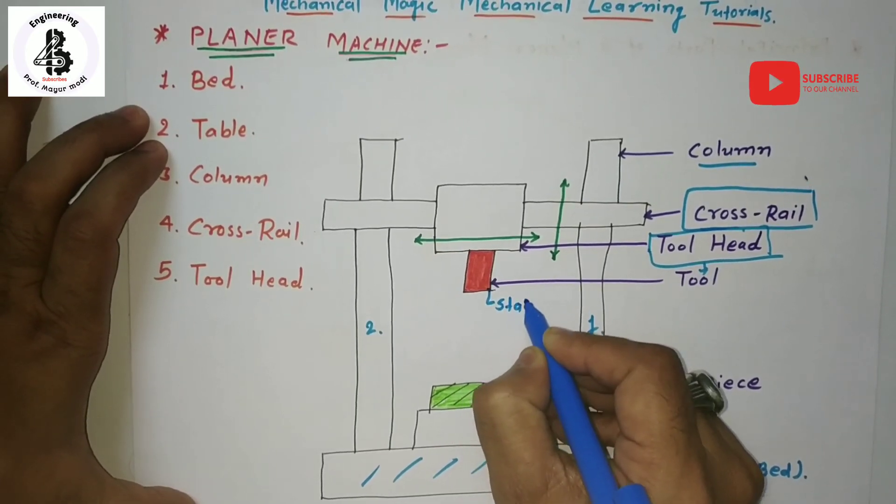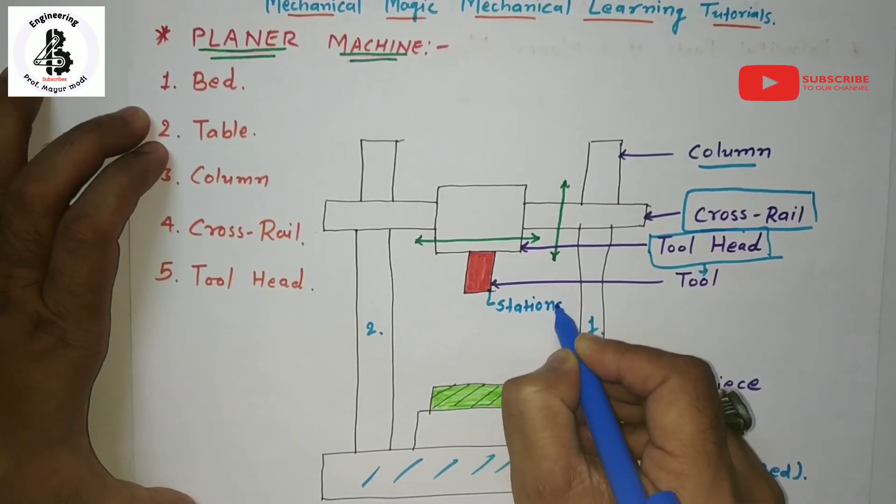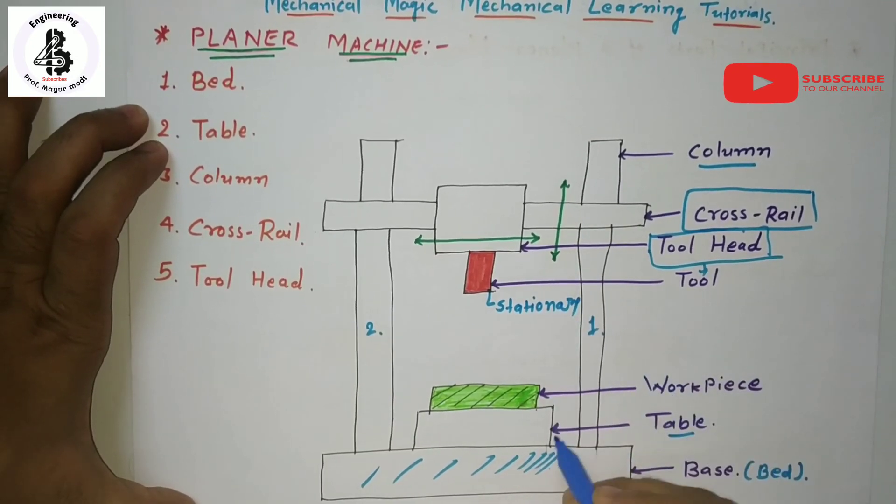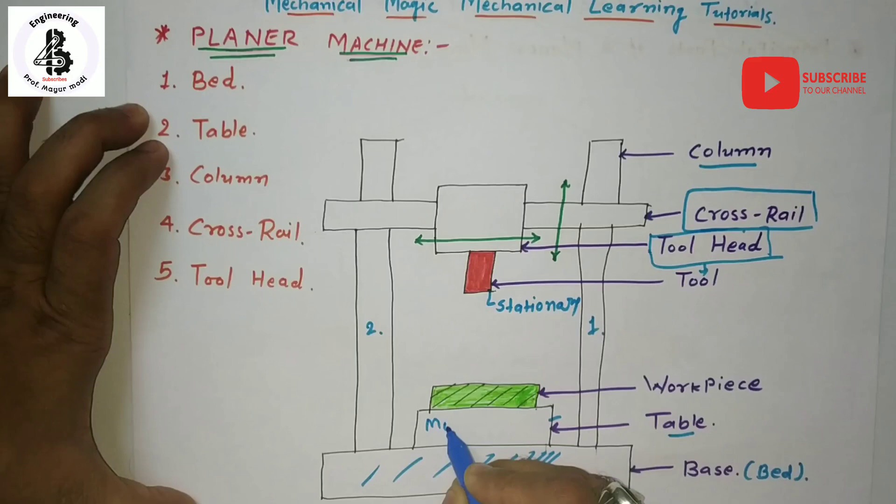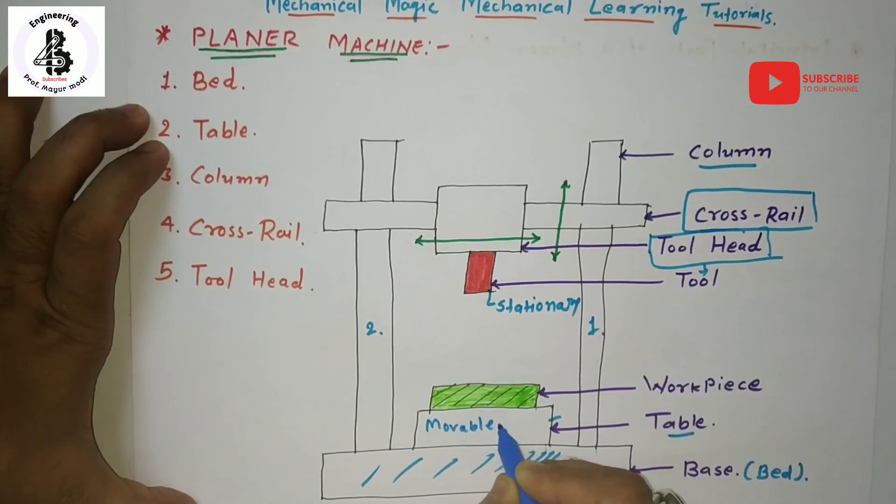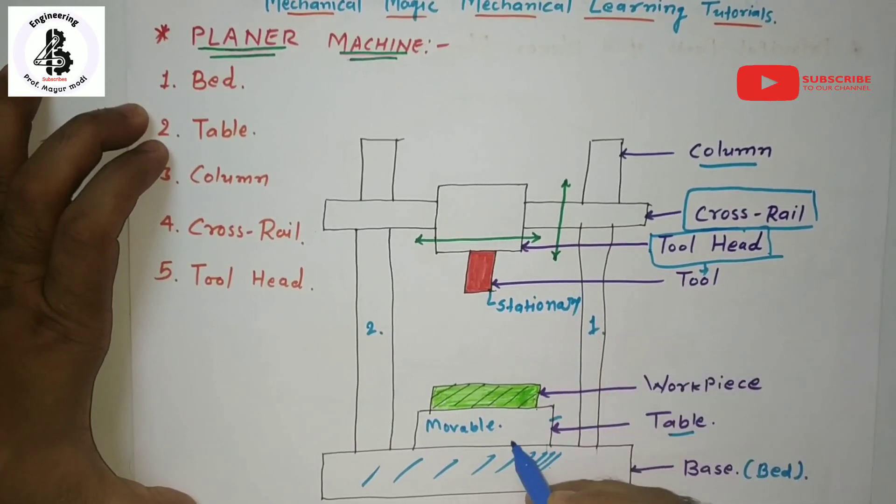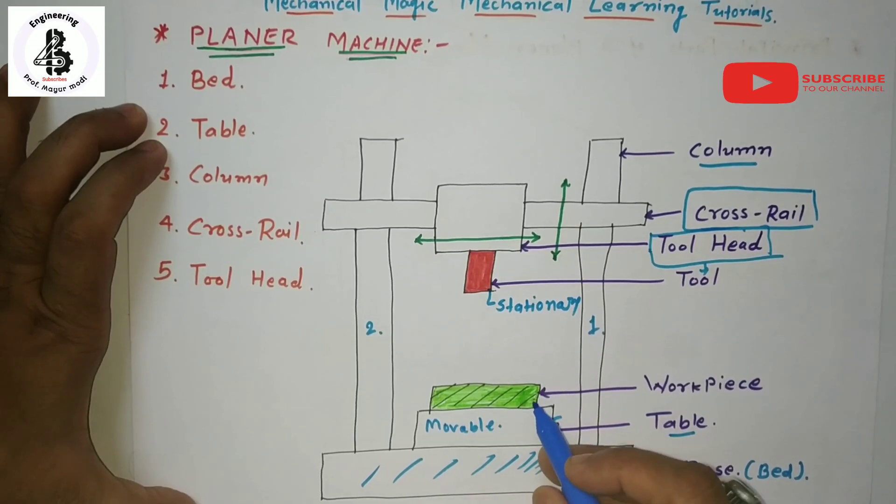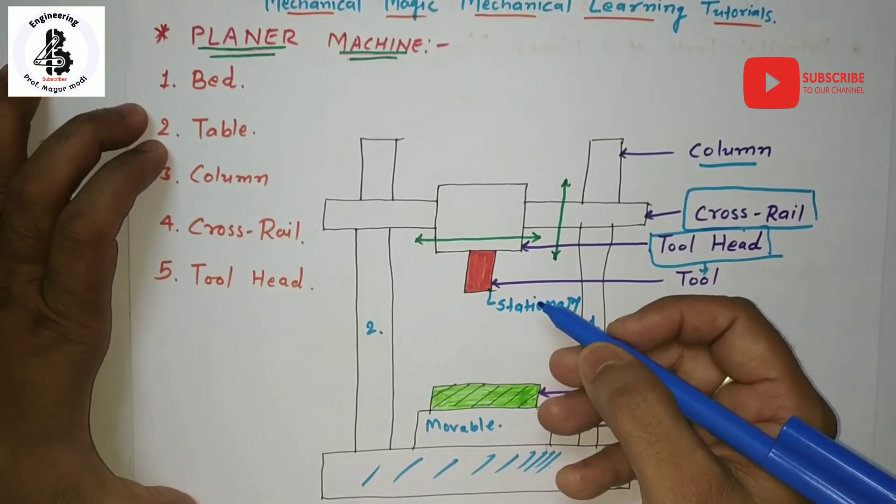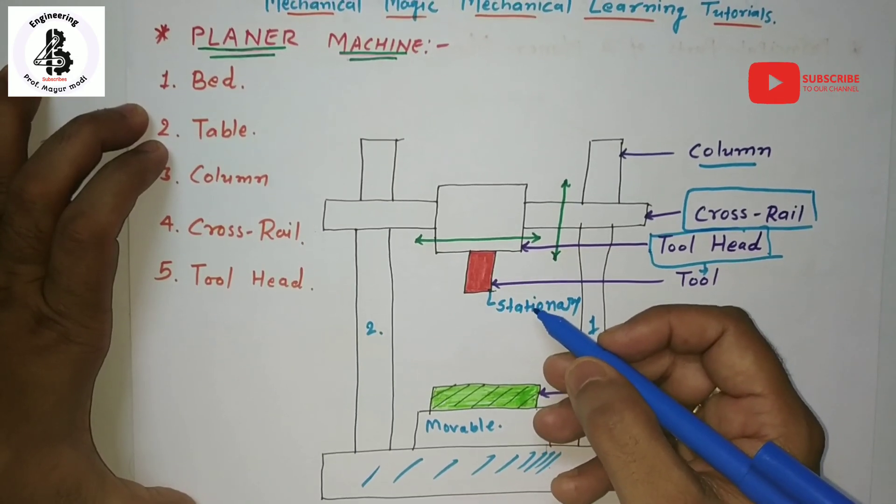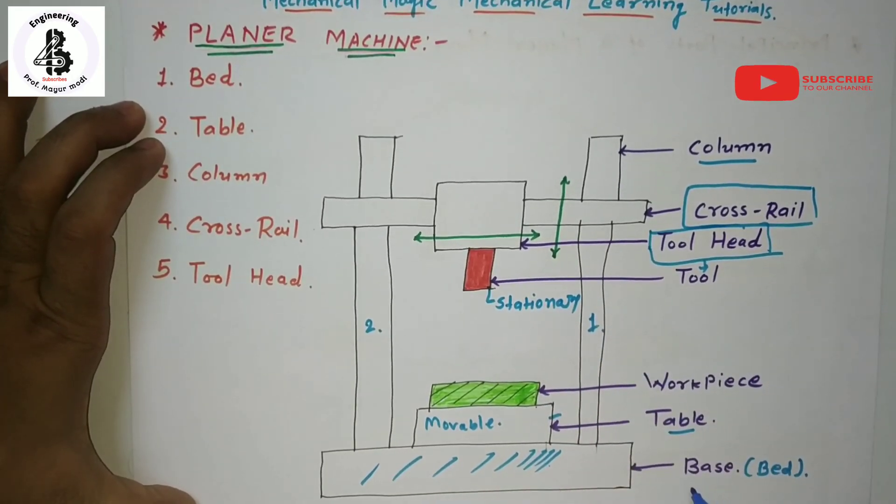The tool is stationary and the workpiece is fed against the stationary tool. That will be all about the base or bed that is used in the planer machine.